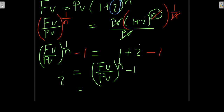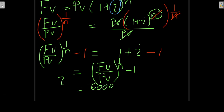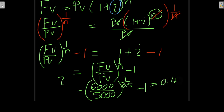Substituting: future value = 6,000 rands, present value = 5,000 rands, and N = 0.5. Calculating gives 0.44. The full answer is: the interest rate is 0.44 per annum compounded annually, or equivalently 44% per annum compounded annually.